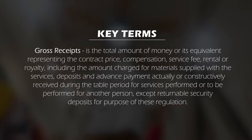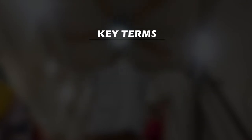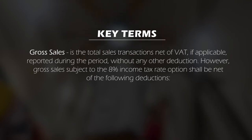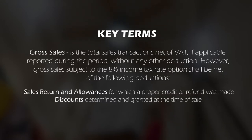To start off, let's have some key terminologies related to the conduct of business for those who have little or no accounting knowledge. First, gross receipts refers to the total amount of money or its equivalent representing the contract price, compensation, service fee, rental or royalty, including the amount charged for materials supplied with services, deposits, and advance payment. Gross sales is the total sales transaction net of VAT, if applicable, reported during the period without any other deduction. However, gross sales subject to the 8% income tax rate option shall be net of sales returns and allowances for which a proper credit or refund was made, and discounts determined and granted at the time of sale.